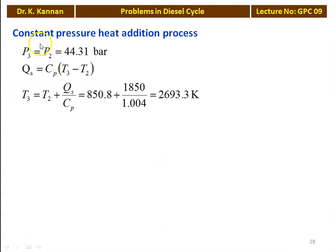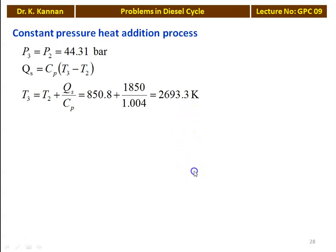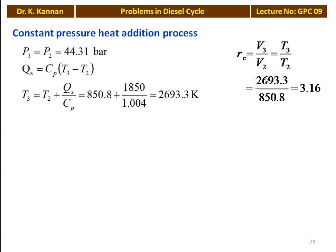For the constant pressure heat addition process, P2 equals P3 equals 44.31 bar. Qs equals Cp into (T3 minus T2), so T3 equals T2 plus Qs divided by Cp: 850.8 plus 1850 divided by 1.004 equals 2693.3 Kelvin. The cutoff ratio Rc equals V3 by V2, which equals T3 by T2: 2693.3 divided by 850.8 equals 3.16.